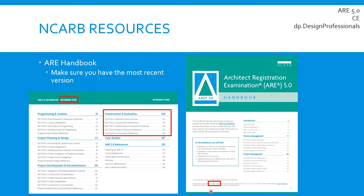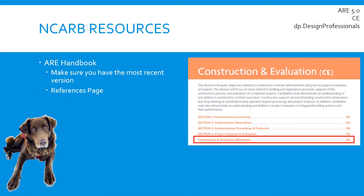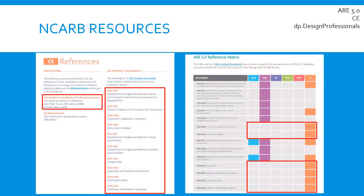The area we will be focusing on today is the Construction and Evaluation exam, which is found here. The particular places we are interested in looking at are the references. We want to know what to study for this exam so we can learn the information and pass, so we're going to go to the references section of the ARE handbook. Here NCARB outlines all of the resources they're recommending for this exam.